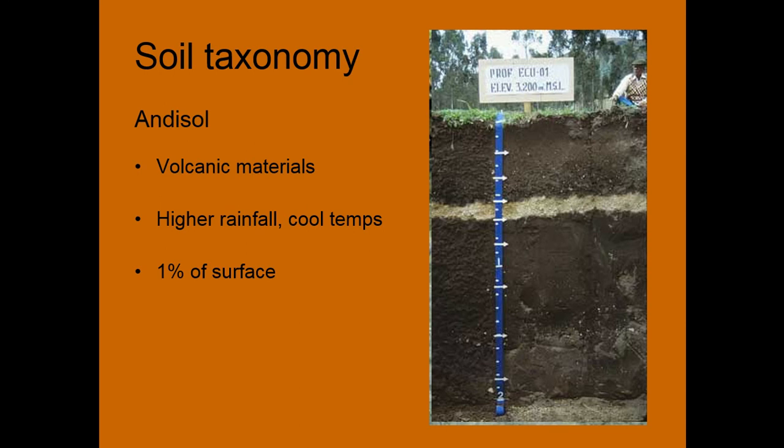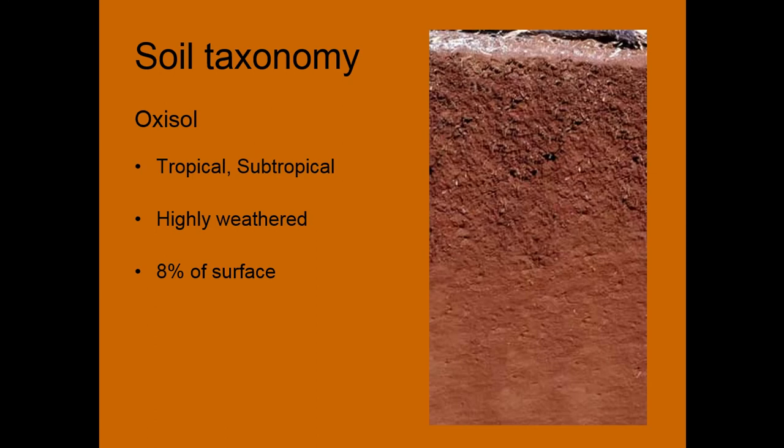Andisols are derived from volcanic materials. A great place to see some Andisols is if you ever get to go to Iceland — make sure to check out the soil there. They have higher rainfall content but cooler temperatures, about 1% of the Earth's surface.